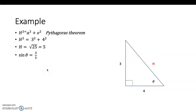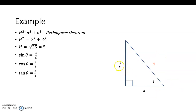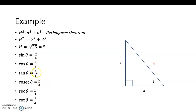Now write the ratios normally. Since h equals 5: sine theta is opposite over hypotenuse, which is 3 over 5; cosine theta is adjacent over hypotenuse, which is 4 over 5; tangent theta is opposite over adjacent, which is 3 over 4. The reciprocals give cosecant theta as 5 over 3, secant theta as 5 over 4, and cotangent theta as 4 over 3.